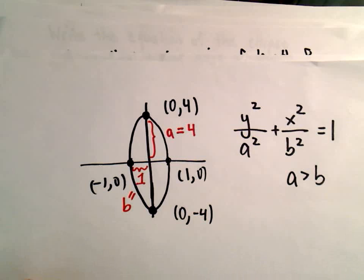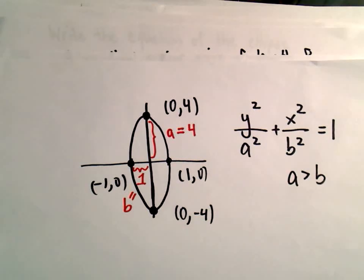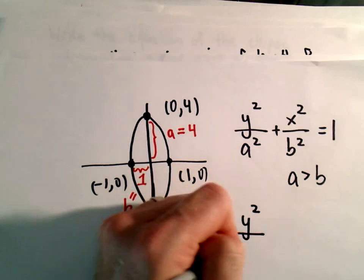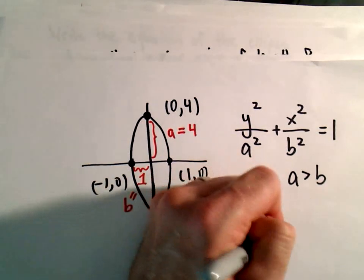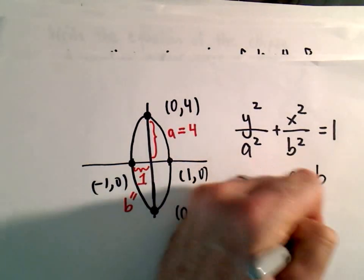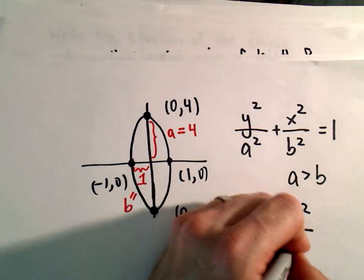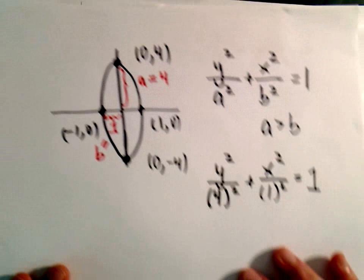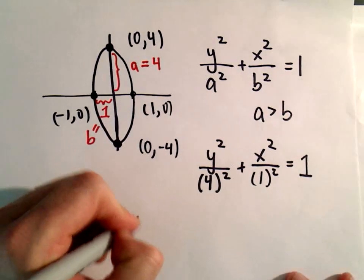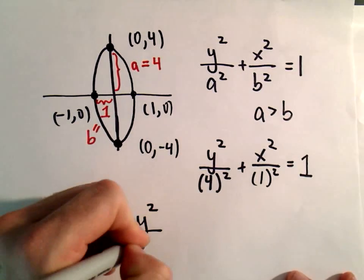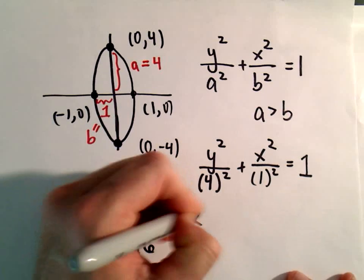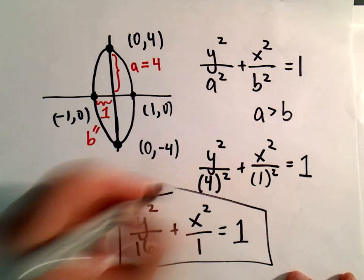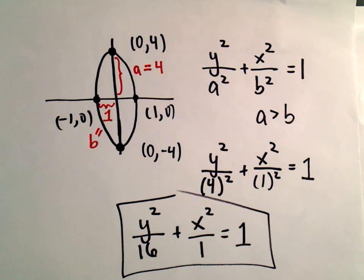So nothing else to do now other than plug those in. So we would get y²/4² + x²/1² = 1. And of course we could simplify this down a little bit and simply say it's y²/16 + x²/1 = 1. And now we have the equation of our ellipse.